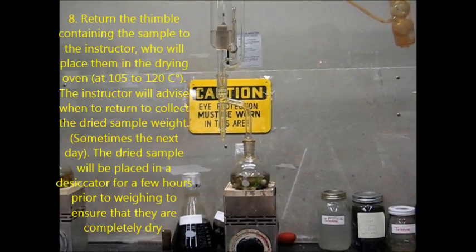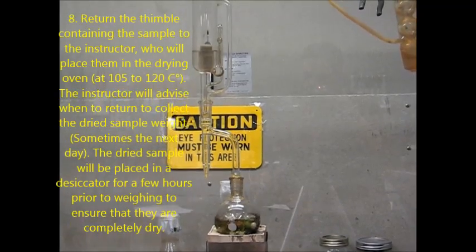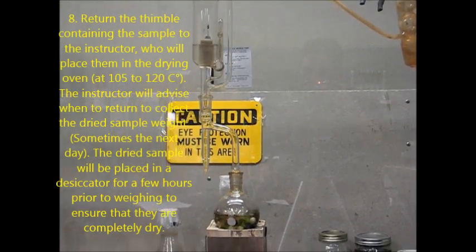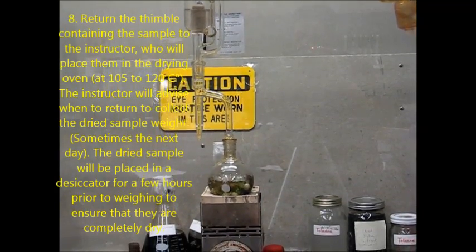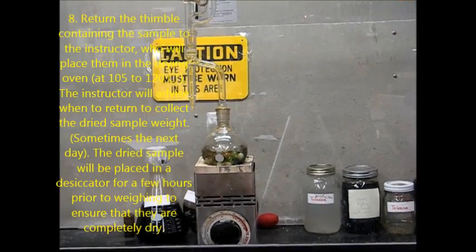Return the thimble containing the sample to the instructor who will place them in a drying oven. The instructor will advise when to collect the dried sample weight sometime in the next day. The dried sample will be placed in a desiccator for a few hours prior to weighing to ensure that they are completely dry.